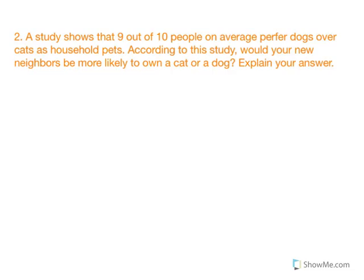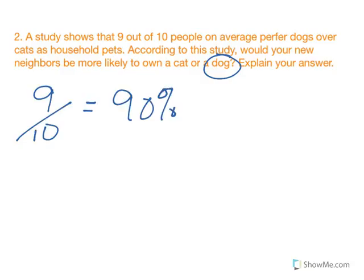A study shows that 9 out of 10 people on average prefer dogs over cats. According to this study, would your new neighbors be more likely to own a dog or a cat? Dog. 9 out of 10, that's 90% of people. That is more than half, it's the majority. Because the majority prefer dogs, you would expect that if somebody moves in, they would prefer a dog. That doesn't mean everybody prefers dogs, we've got that 10% that don't, but it's a majority.